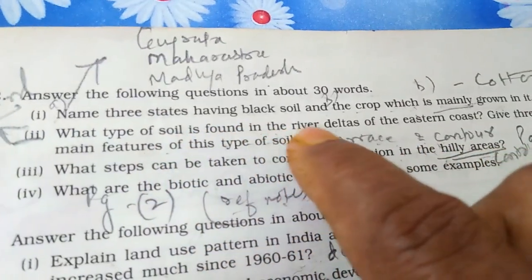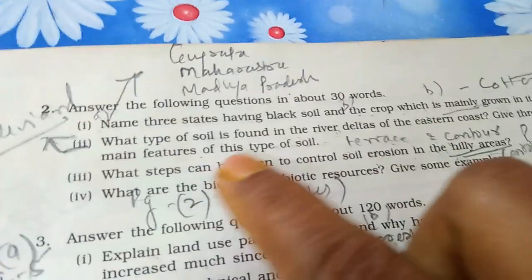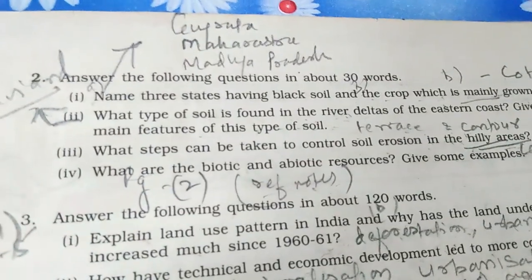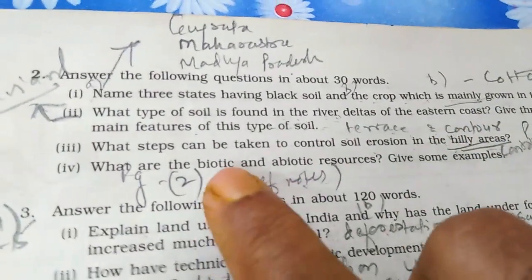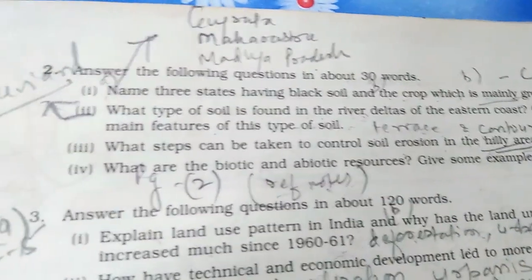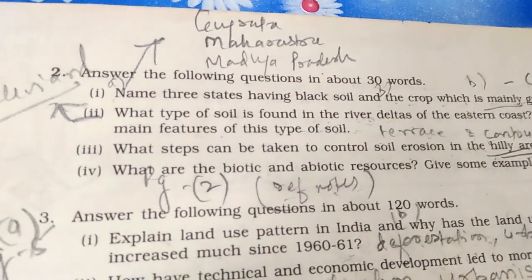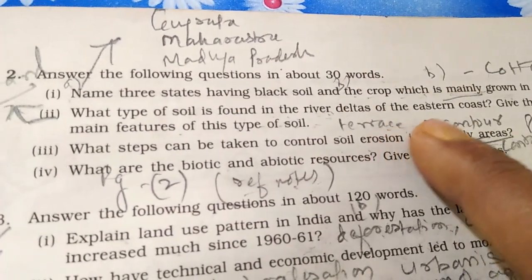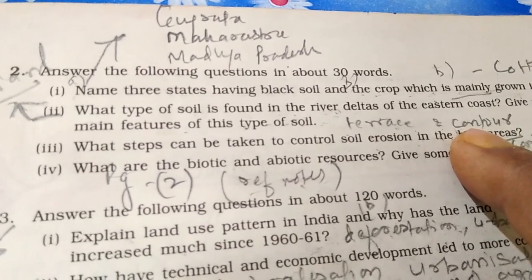Which type of soil is found in river deltas? It is alluvial soil. Alluvial soil is found in river deltas — Sundarvan delta, Mahanadi delta, Godavari delta, Krishna delta, Kaveri delta — along the eastern coast. Give three main features: it has sand, silt, and alluvium content; it is deposited by perennial rivers; and it can be broadly divided into old alluvial and new alluvial soil. You can refer these points from page number eight.